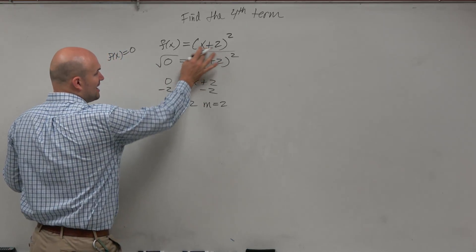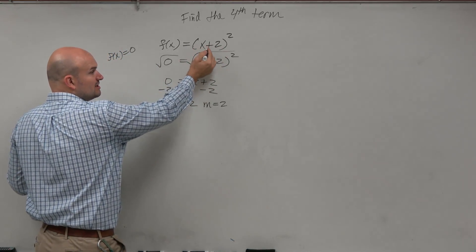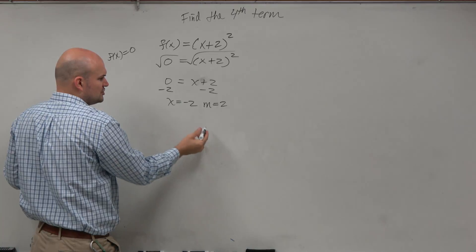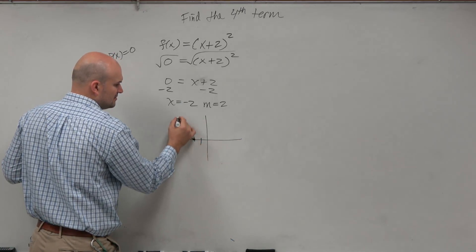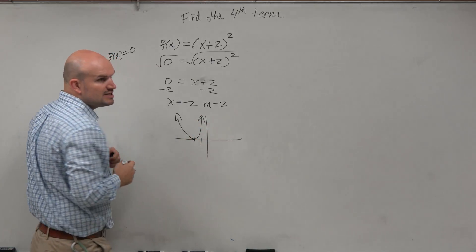And if we were to look at this graph, if we were to graph this, what is this graph doing? What is the plus 2 doing? It's just shifting the graph 2 units to the left. So do you guys see how the graph bounces there?